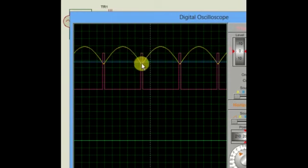So this waveform is the zero crossing detector. Thank you.